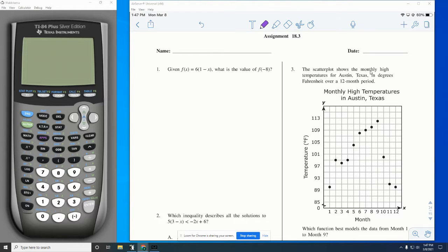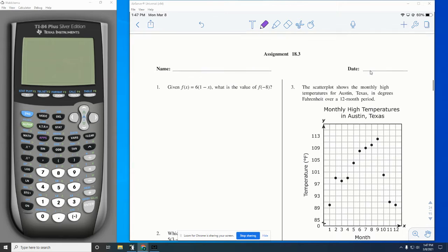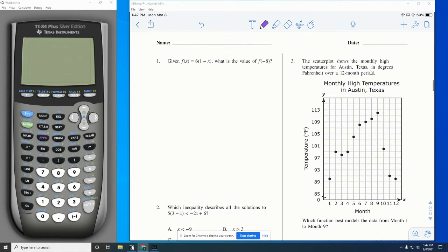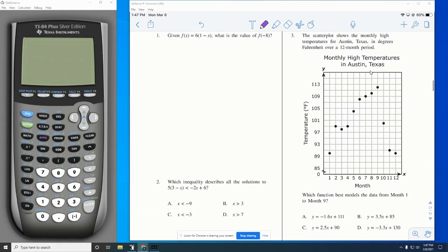So for number three, the scatter plot shows the monthly high temperatures for Austin, Texas in degrees Fahrenheit over a 12-month period. Which function best models the data from months 1 to 9? So we don't care about these three sets.